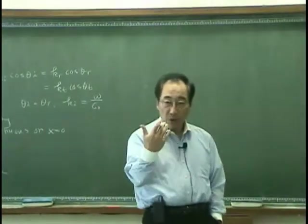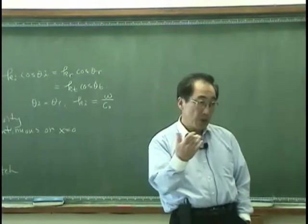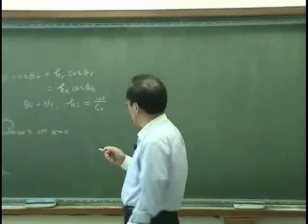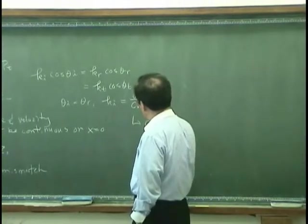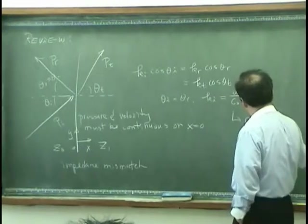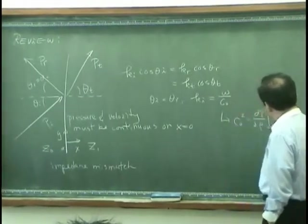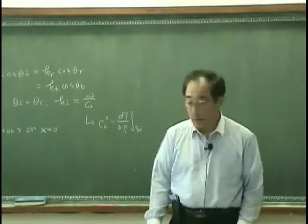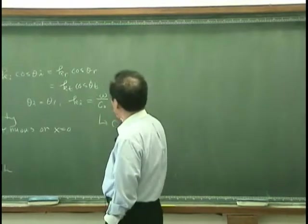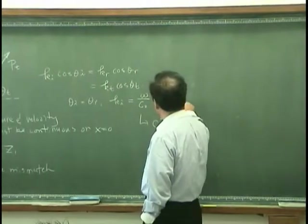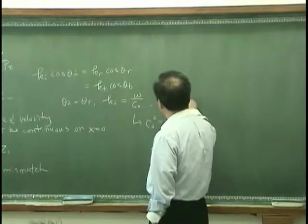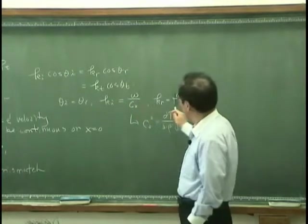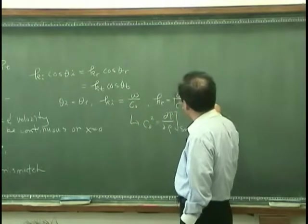This is because k_i, the wave number, has to be omega over c_0, where c_0 is the propagation velocity in medium zero, and c_0 must obey the isentropic process gas law. Therefore, k_r has to be the same as k_i, because k_r must also be omega over c_0. So k_r equals k_i.